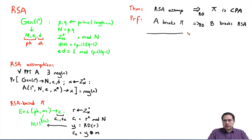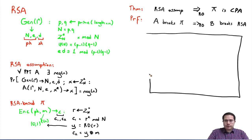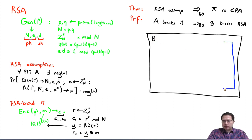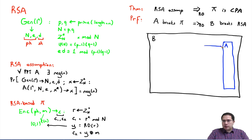Let's start by defining our adversaries. Outside we will have adversary B; inside we will have adversary A. Adversary A is playing the CPA game for scheme π. The CPA game says the adversary must be given the security parameter together with the public key pk.